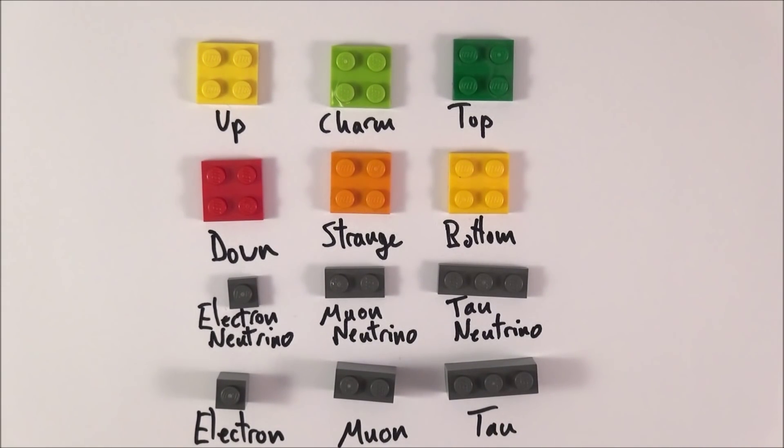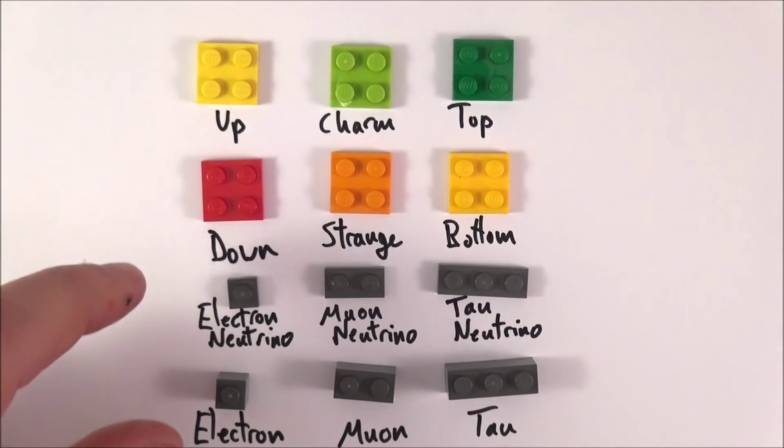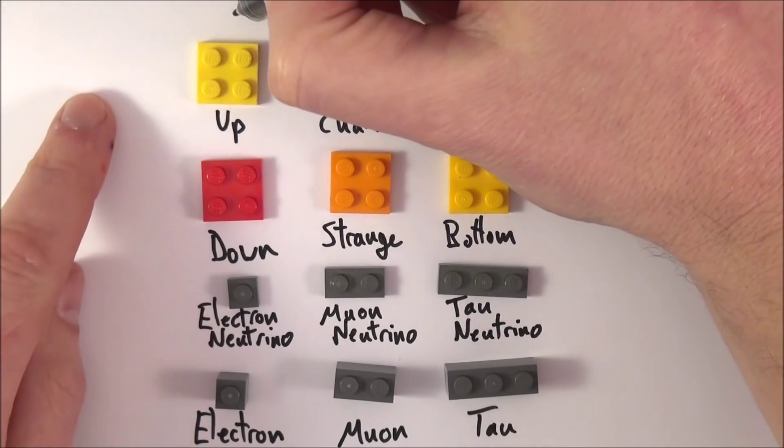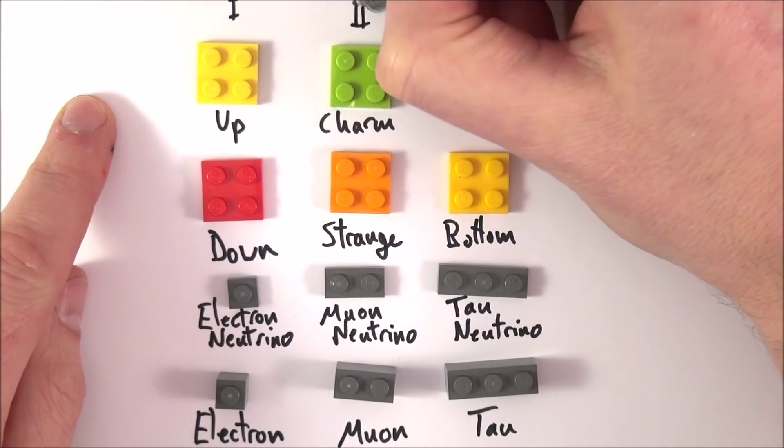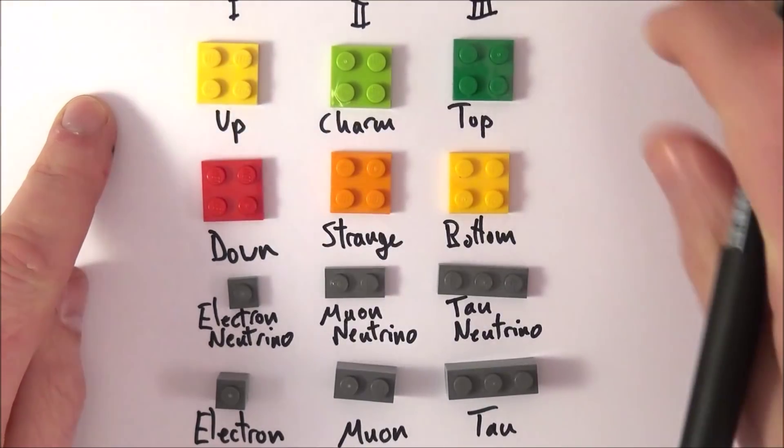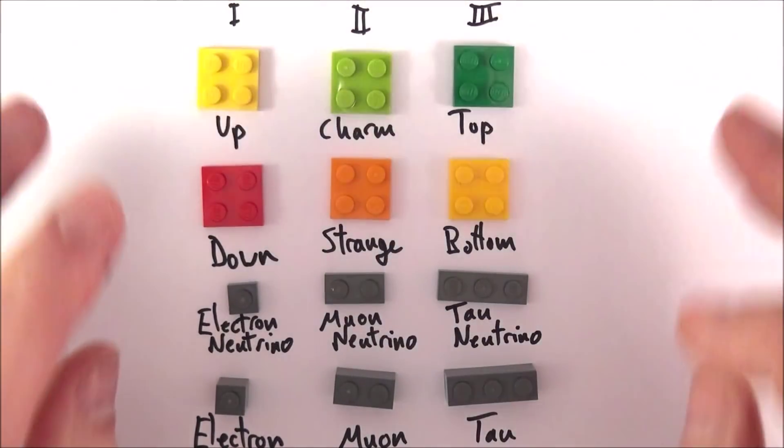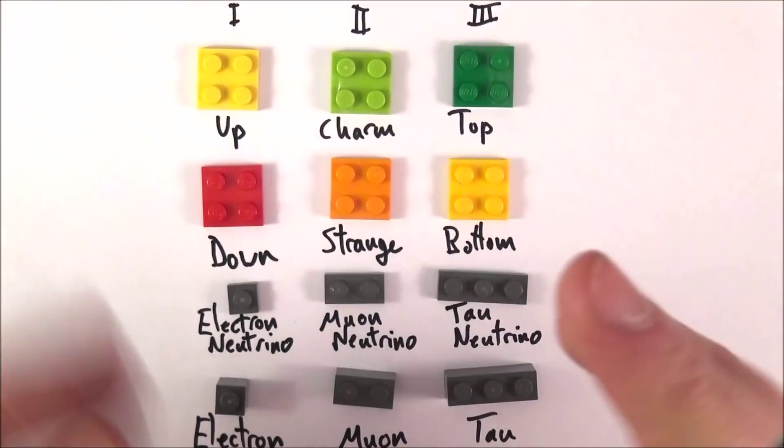What we have here are quarks at the top, and we also have a classification of particles that we call leptons. What we find is that there's basically three generations of matter: the first generation, second generation, and third generation. Why is that? I don't know, and I don't think anybody knows at the moment. There must be a reason for this.